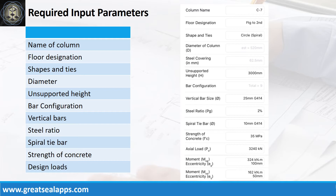Vertical bars: 25 mm bar grade 414. Steel ratio: 2%. Spiral tie bars: 10 mm bar grade 414. Strength of concrete: 35 MPa. Factored axial load: 3,240 kN. Factored moment and eccentricity at x-axis: 324 kNm and 100 mm. Factored moment and eccentricity at y-axis: 162 kNm and 50 mm.